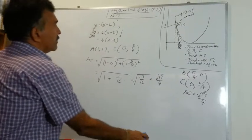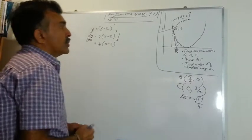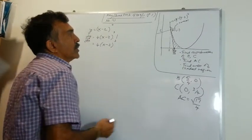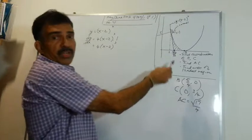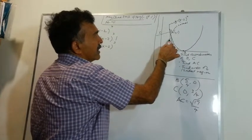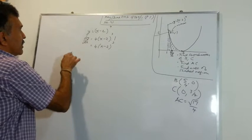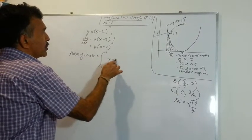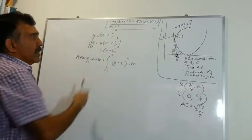Then they want the area of the shaded region. There are two parts to finding this. We know this value here is 1, and where the curve touches the x-axis the value is 2. We will take the whole area under the curve and subtract the area of the triangle. The area of the whole region is the integral from 1 to 2 of (x minus 2) to the power of 4 dx.